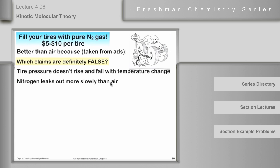Second claim: nitrogen leaks out more slowly than air. The molar mass of N₂ is 28; the average molar mass of air is about 29 grams per mole. By Graham's law, the lower molar mass means N₂ will actually effuse more rapidly — meaning it leaks out faster. So this claim is also bogus.